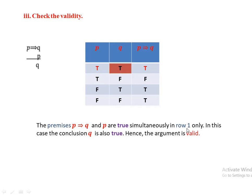All premises are true simultaneously only in row 1, and in that case the conclusion Q is also true, so the argument is valid. The general rule is to determine whether a given argument is valid by symbolizing the statements, identifying premises and the argument form, and then checking validity using truth tables. Thanks for watching.